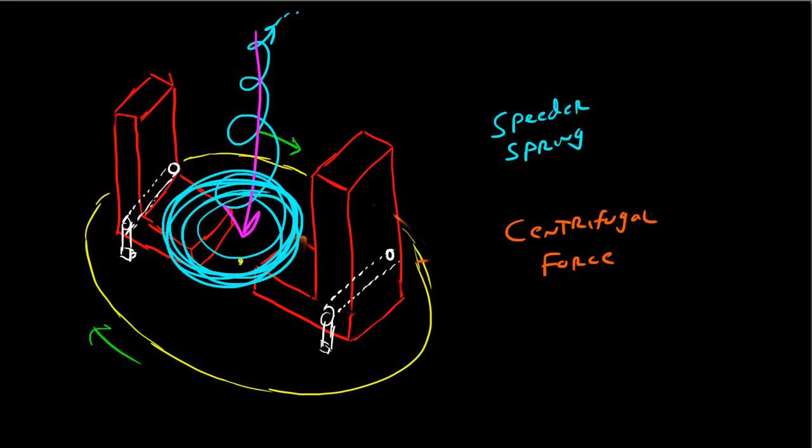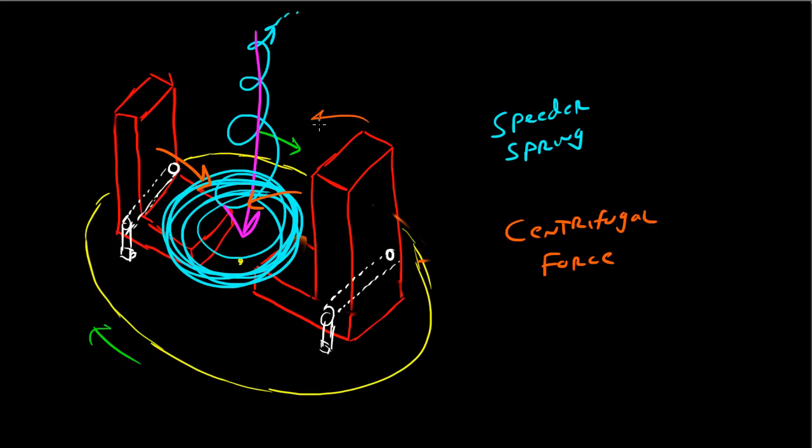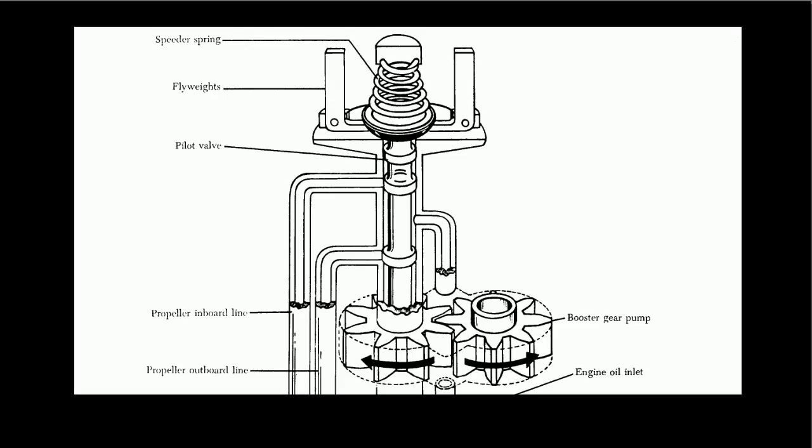So, the spring is always pushing down on this ring, applying a downward force. Well, if you're applying a downward force thanks to the speeder spring, then the weights are going to have a tendency to tilt inward. And so, I'll see if we can draw that. Here's the weights tilting inward. The weights themselves will tilt inward, like this. There we go. Something like that. Because of the pressure from the speeder spring right here, which is tending to tilt them inwards. So, there we go. That's the way that the flyweights move.